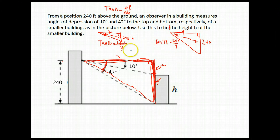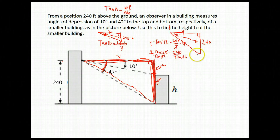From here, we need to set up some sort of equation. I'm going to solve each of these for y. I'll start with this one here. I'm going to multiply both sides by y to get it out of the denominator. I have y times the tangent of 42 equals 240. I'm going to divide both sides by the tangent of 42. So y equals 240 divided by the tangent of 42.